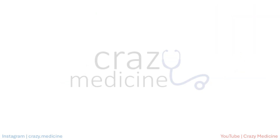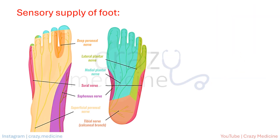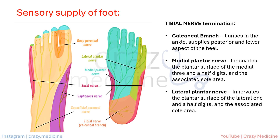In the foot, we have already discussed sensory supply by the superficial peroneal, deep peroneal, sural, and saphenous nerves. The sole of the foot is mainly supplied by tibial branches — which are the calcaneal branch, medial plantar nerve, and lateral plantar nerve. This completes our basic knowledge of anatomy, which will help in understanding lesions and localization clinically.